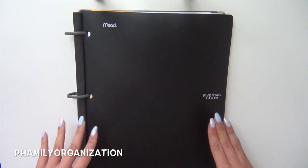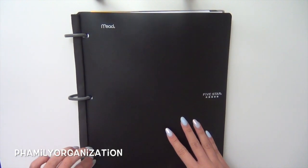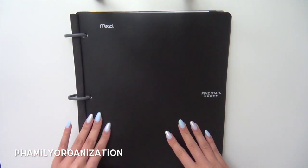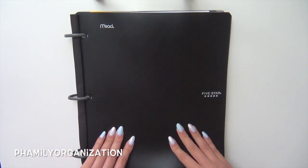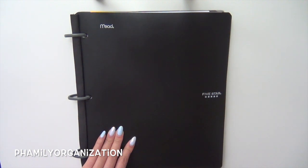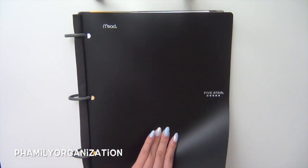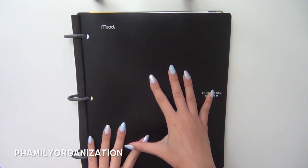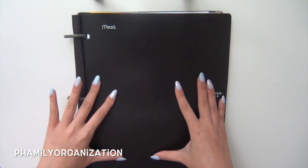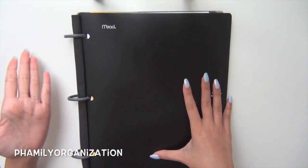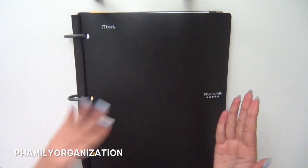So I just started this method of using the Five Star binder notebook thing and I kind of love it. I'm so glad I found this out but basically I just like to keep everything together. So I like everything in one contained spot just because it's easier.